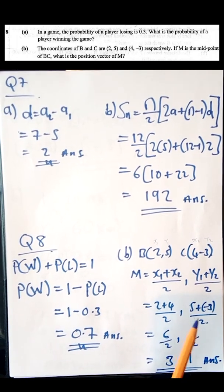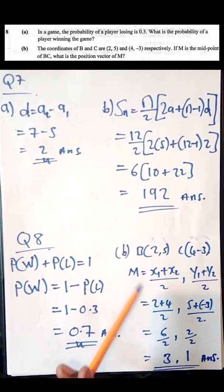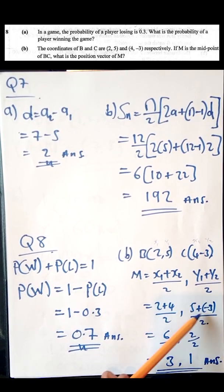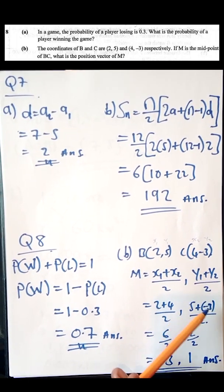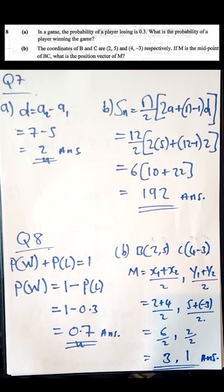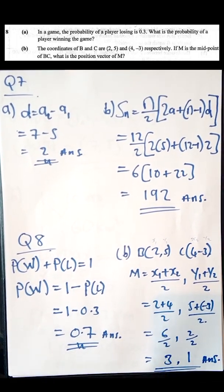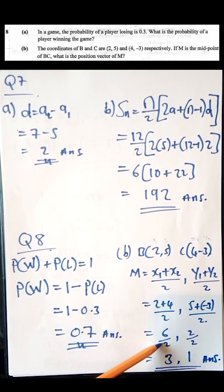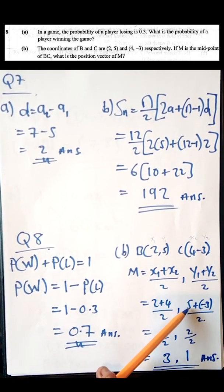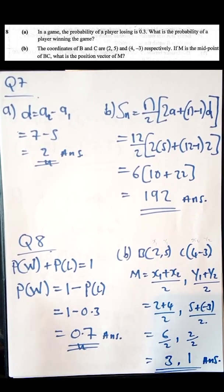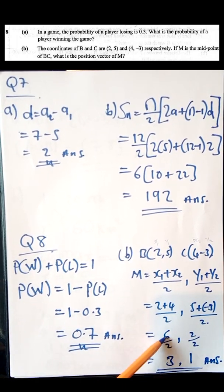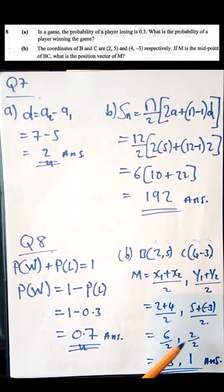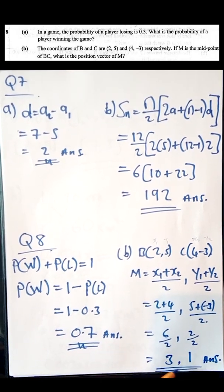Replacing into the formula: x1 is 2, x2 is 4, y1 is 5, y2 is 3, everything divided by 2. So (2 + 4)/2 = 6/2 = 3, and (5 − 3)/2 = 2/2 = 1. The midpoint M is (3, 1).